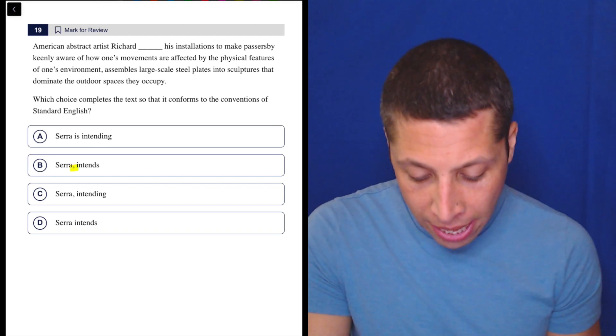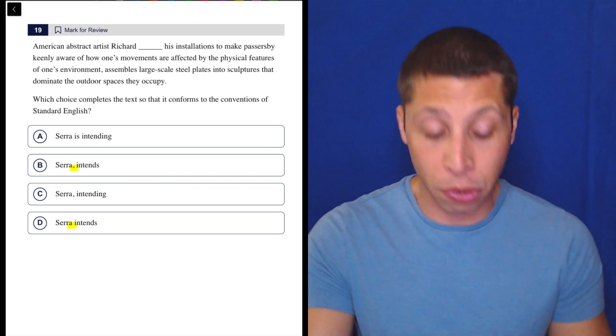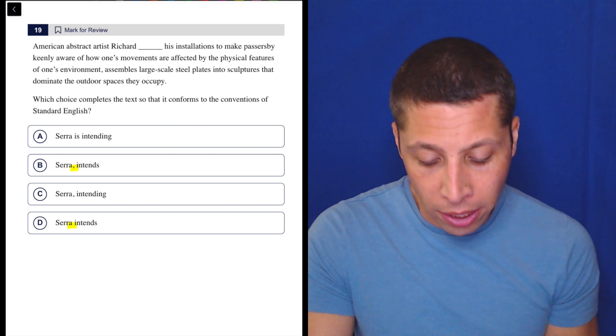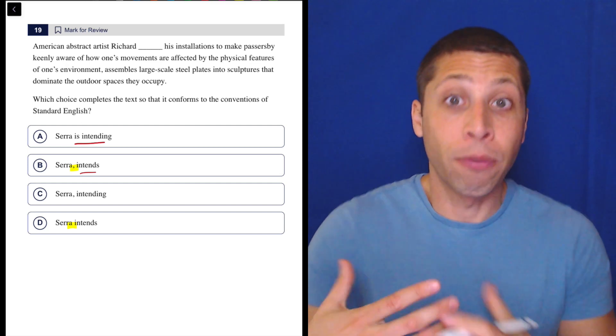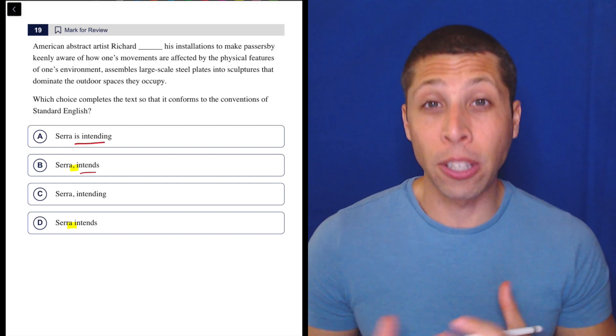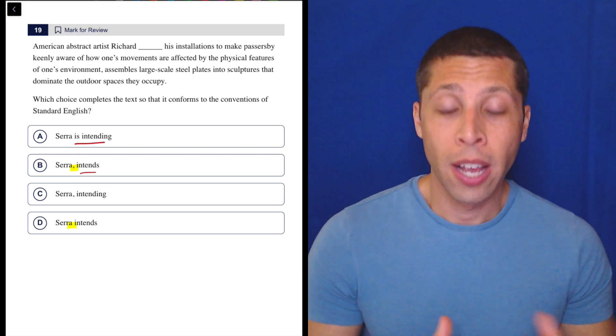We have in choices B and D either a comma comes or it goes, but we're also changing the verb tense itself. Where is intending versus intends, right? Those are different verb forms, and they're going to affect how the structure of the sentence works.